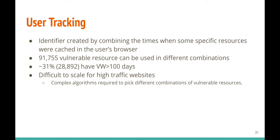Another use case is user tracking — creating a unique identifier for a user to track their visits across multiple websites. The identifier is created by combining the times when specific resources were cached in the user's browser. The 91,755 vulnerable resources we found can be used in different combinations to build a unique identifier per user. However, scaling this is difficult for high-traffic websites because multiple users visit at the same time, requiring complex algorithms to select different resource combinations.